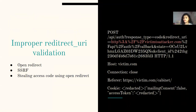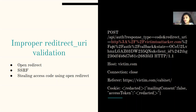Another common vector is improper redirect URI validation. Most researchers stop at filing an open redirect, but you can also perform SSRF and steal the access code. If you see your attacker website receiving a 'success' response, you know they're accepting any domain. Simply intercept, forward, and you'll get the token sent to your attacker domain.